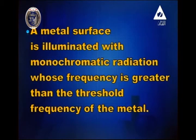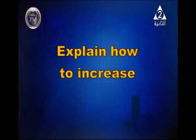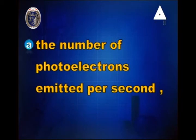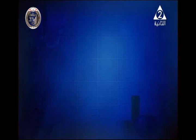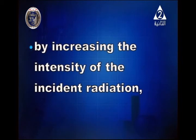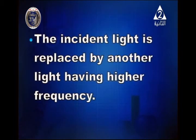A metal surface is illuminated with monochromatic radiation whose frequency is greater than the threshold frequency. To increase the number of photoelectrons emitted per second: increase the intensity of the incident radiation. To increase the maximum kinetic energy of the photoelectrons: replace the light with another one of higher frequency.